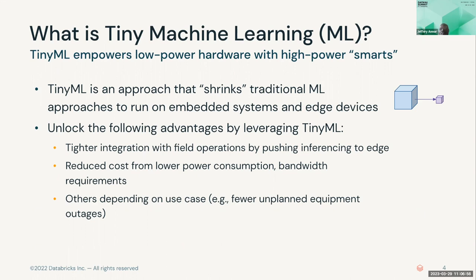In the process of doing all of that comes the issue of latency. Shipping data from the edge device to the cloud introduces latency. Running inference in the cloud introduces latency. And shipping results back to the edge device also introduces latency. So the whole concept of tiny machine learning is: how do we shrink these gigantic models trained in the cloud to enable them to run anywhere?